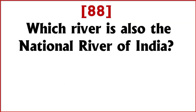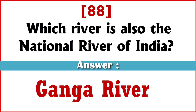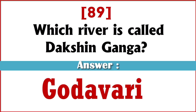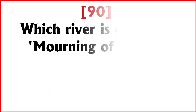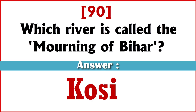Which river is also the national river of India? Answer: Ganga River. Which river is called Dakshin Ganga? Answer: Godavari. Which river is called the Mourning of Bihar? Answer: Kosi.